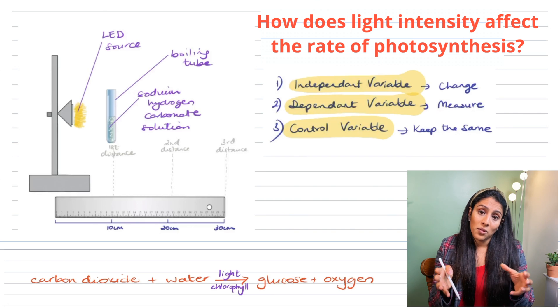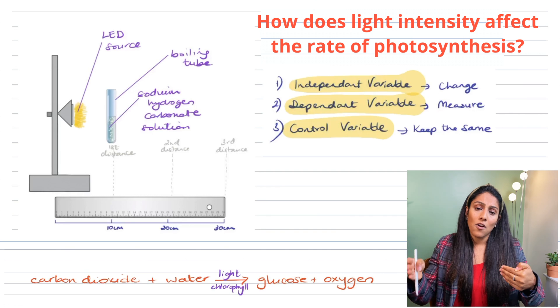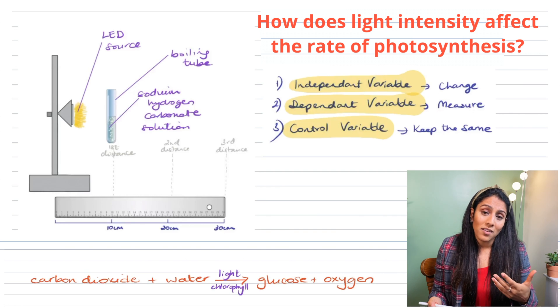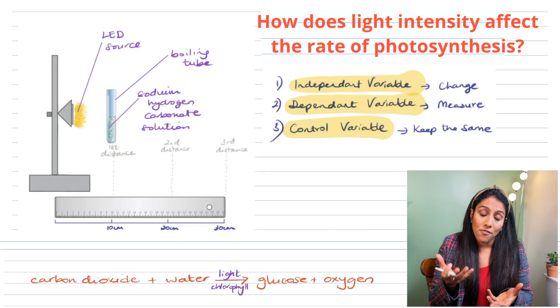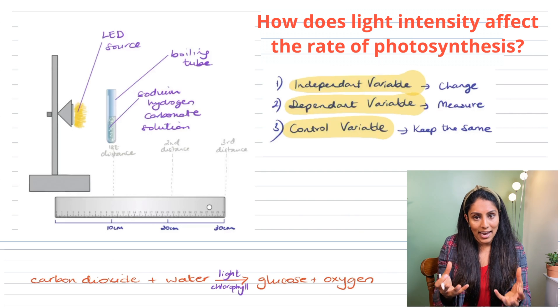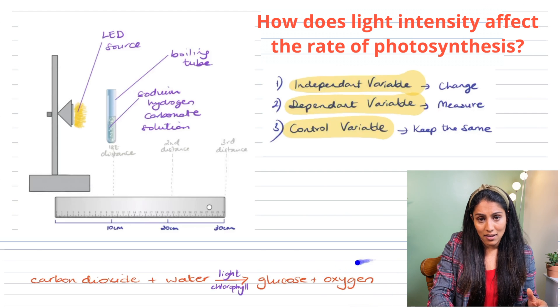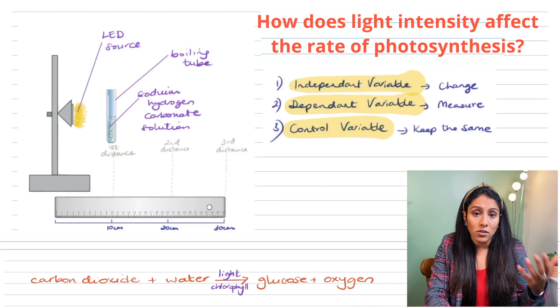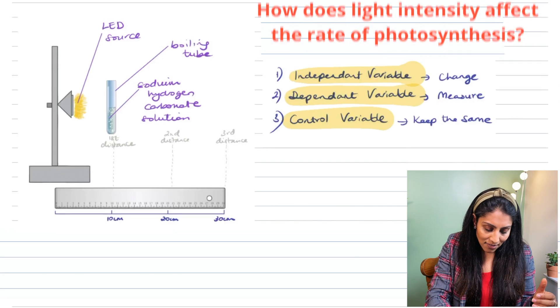Remember the independent variable in this case, the thing that we're changing, is the distance from the light. What are we going to measure? We're going to measure the bubbles that come from the pondweed because they contain oxygen. You can see here from the experiment if we link it back to the equation, oxygen is a product of photosynthesis so it shows that the pondweed is actually photosynthesising.